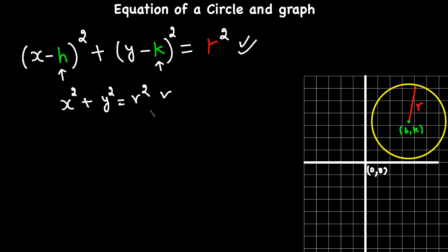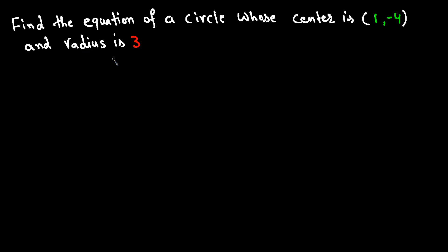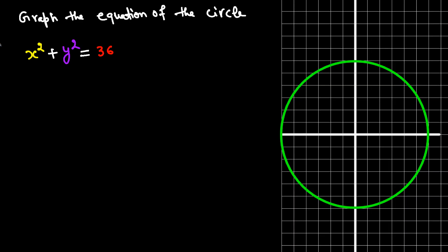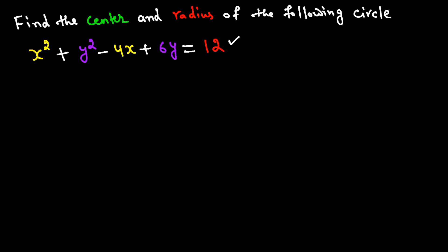Now we're going to write some equations of a circle and find the radius and center from the equation. We'll go over a few examples: in the first example we'll find the equation of a circle whose center and radius are given; in the second example we'll find the center and radius from a given equation; and in the third example we'll graph the circle from the equation.